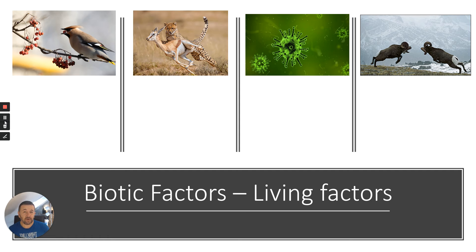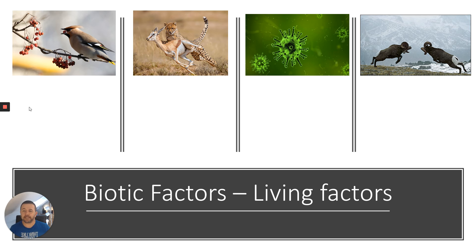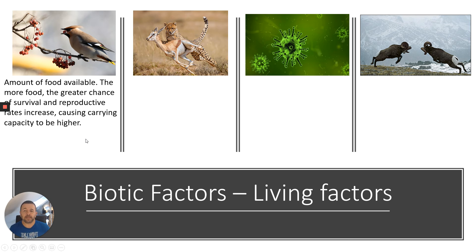Populations of species don't live in isolation — they live with each other, which means we have what we call biotic factors: the living factors that affect a population. These include competition between individuals of the same or different species, and abiotic factors affecting food availability. First, amount of food available: the more food, the greater the chance of survival and reproductive rates increase, so carrying capacity increases. More severe weather patterns can reduce food availability and reduce carrying capacity.